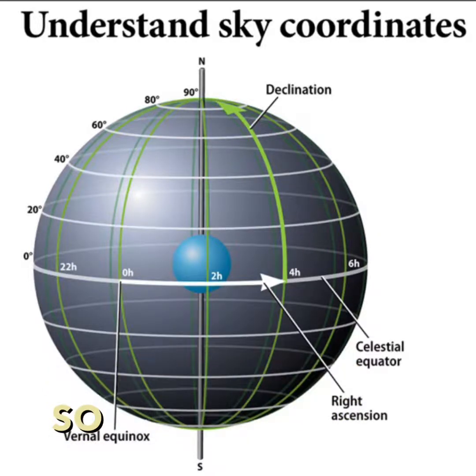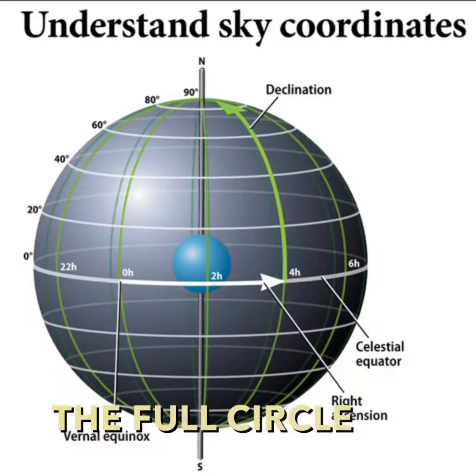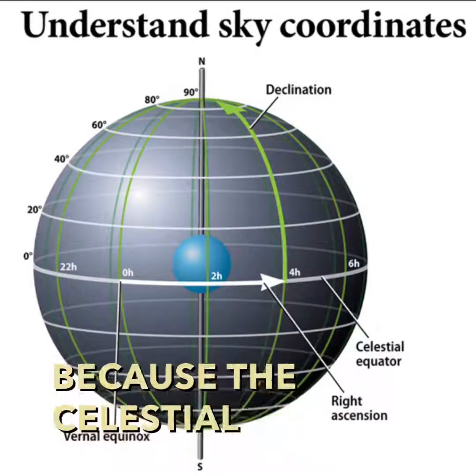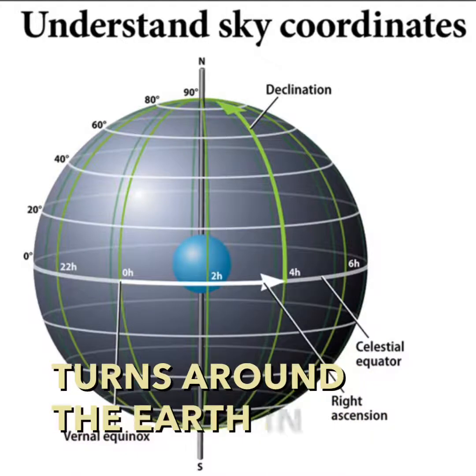So the full circle around the sky is 24 hours because the celestial sphere turns around the earth in 24 hours.